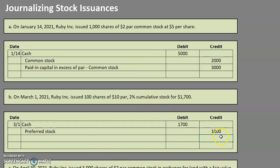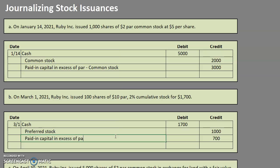We are short by $700, so it is going to be a $700 credit, and that means our plug account is going to be paid-in capital in excess of par — preferred stock.